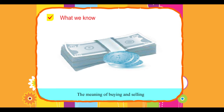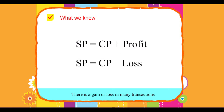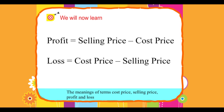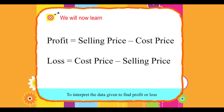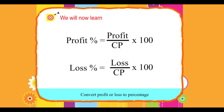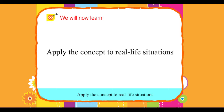What we know? The meaning of buying and selling. There is a gain or loss in many transactions. We will now learn the meanings of terms cost price, selling price, profit and loss — to interpret the data given to find profit or loss, convert profit or loss to percentage, and apply the concept to real-life situations.